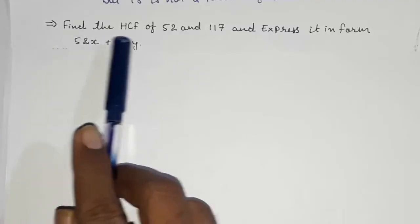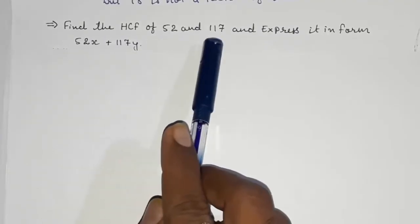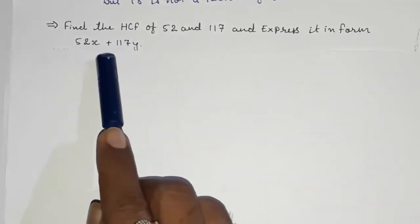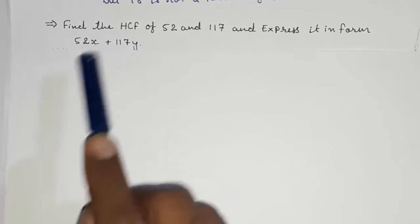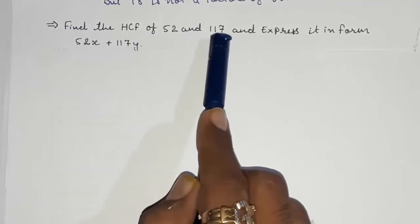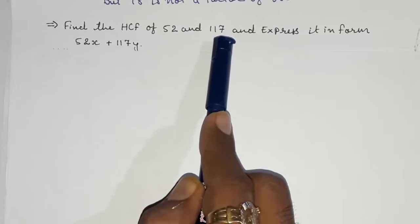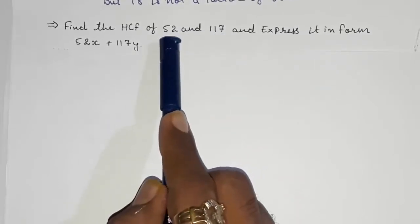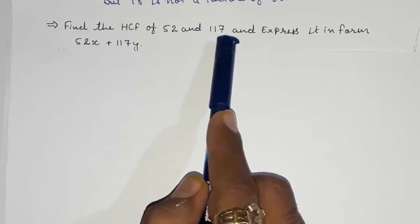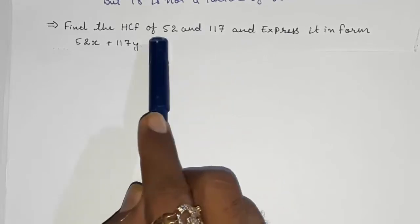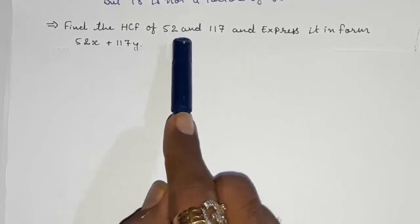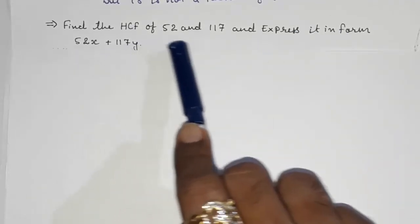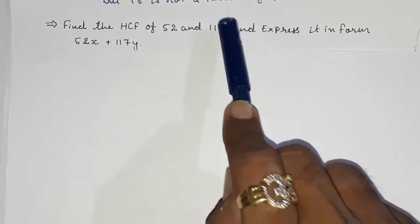Moving to question number two: Find the HCF of 52 and 117, and express it in the form 52x + 117y. First we have to find the HCF of 52 and 117. We can use prime factorization or Euclid's division algorithm. I am going to use Euclid's algorithm, and I'll tell you why at the end — because we have to express it in the form 52x + 117y.